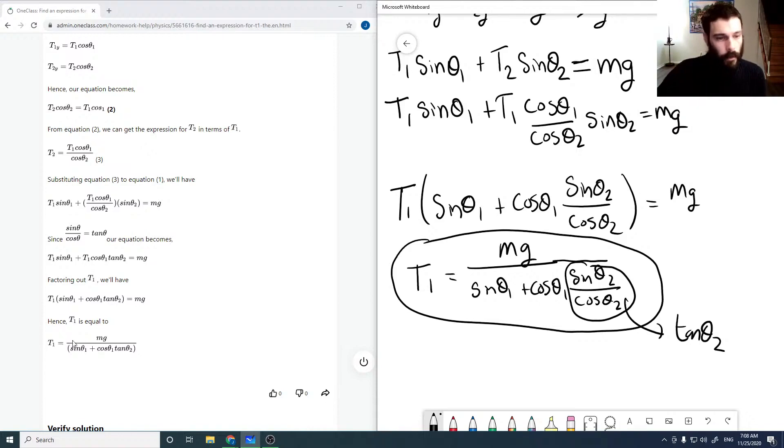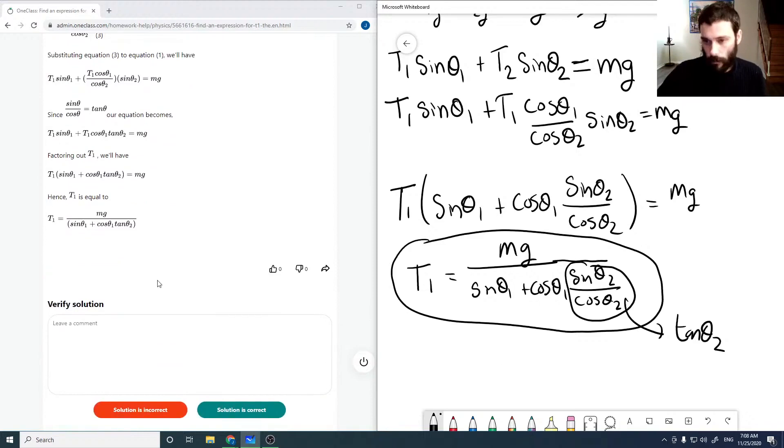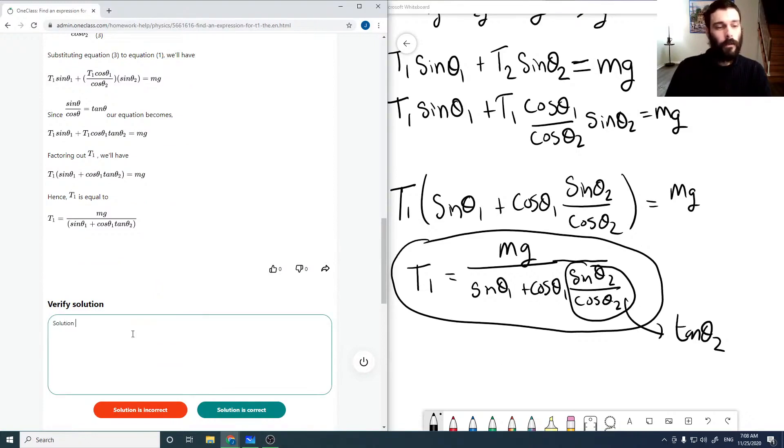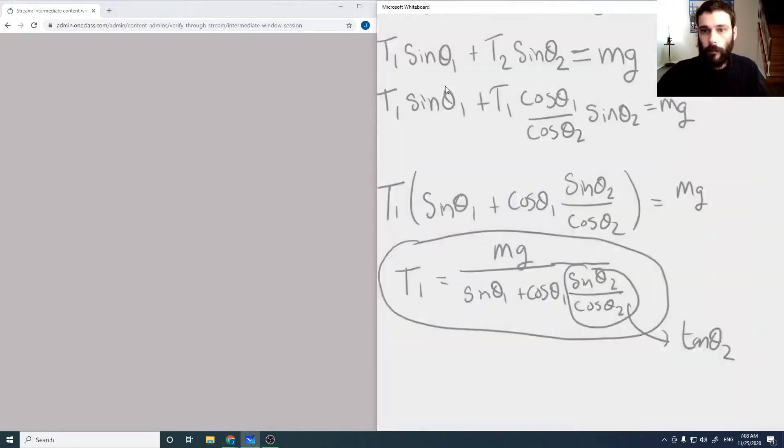But in the end, their solution, which is mg over sin theta 1 plus cos theta 1 tan theta 2, is the same as ours. So I'm just going to say this solution is correct. There we go.